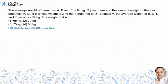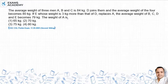Hello friends, I will solve this question. The average weight of 3 men A, B, C is 84. D joins them and the average weight of 4 becomes 80 kgs. If E whose weight is 3 kg more than that of D replaces A, the average weight of B, C, D and E becomes 79 kgs. The weight of A is?